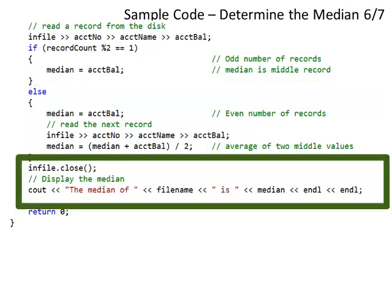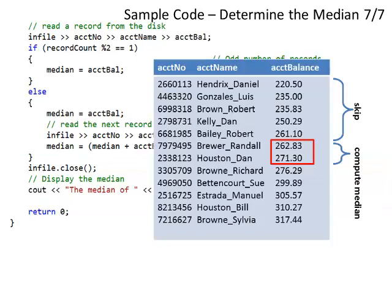So far, so good. If there's an even number, I skip those records, then add two values together, divide by 2, and that's my median. Half the values are below that, and half the values are above.